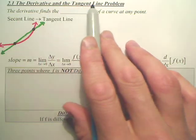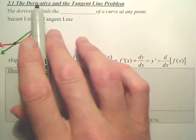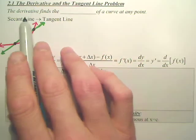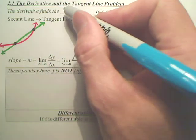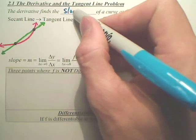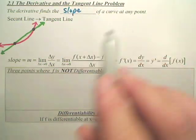The derivative and the tangent line problem. Basically, we're introducing something called a derivative. The derivative finds the slope of a curve at any point.